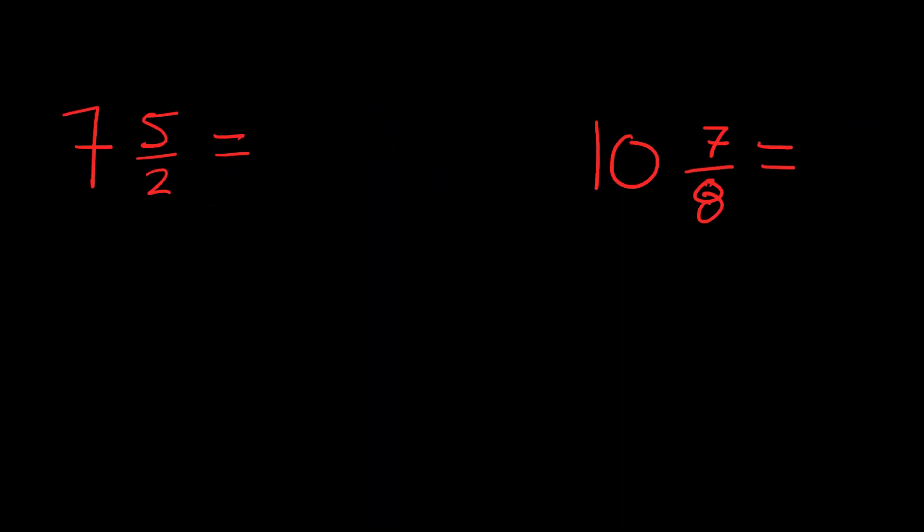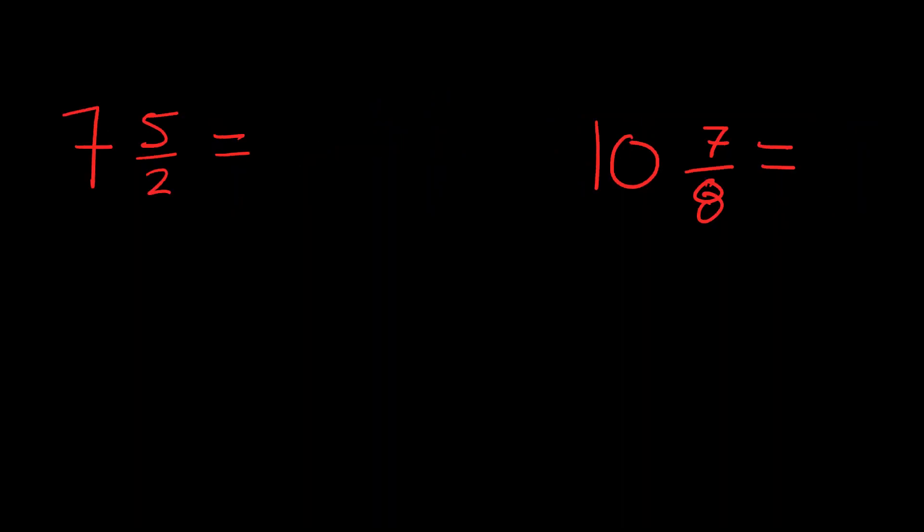Let's do some more. We have seven and five-halves. We have to do seven times two. That's 14 plus five, that's 19. So now we're going to have 19 over two, because we always keep the denominator the same.